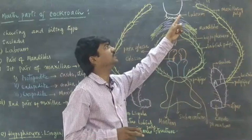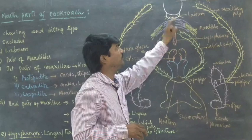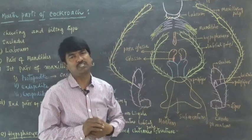Let us see what is labrum. Labrum is a movable structure which is connected to the clypeus and which opens into the pre-oral cavity. If you see the inner wall of labrum, specific hair-like projections are present.